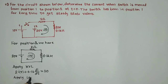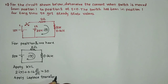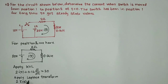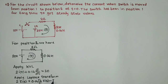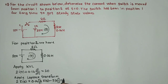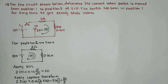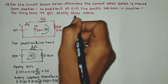Now apply Laplace transform. Taking the Laplace transform, we will have 2·I(s) plus 0.14 times [s·I(s) minus i(0)] equals 20/s, where i(0) is the initial current.